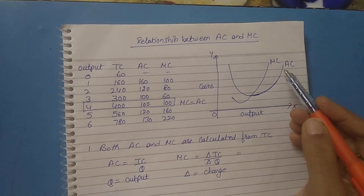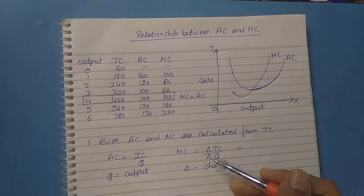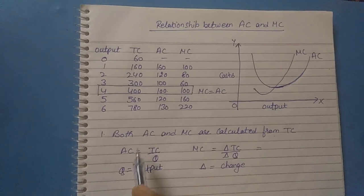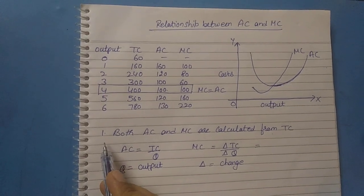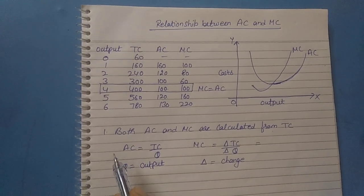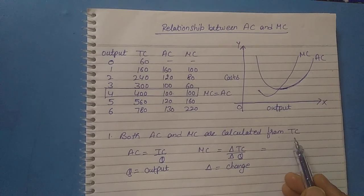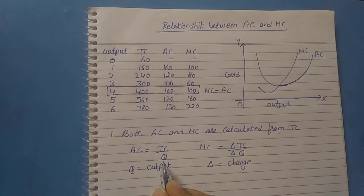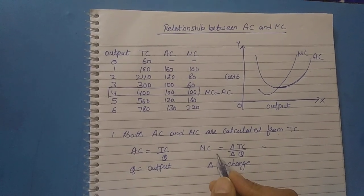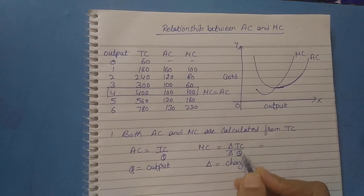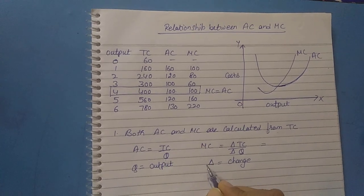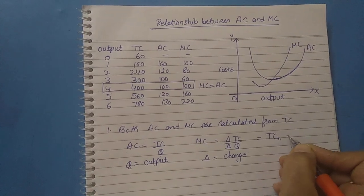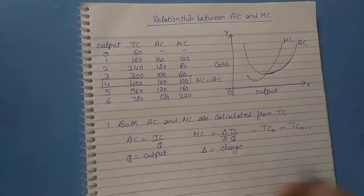Now we will derive this diagram into words — the explanation of how to write the relationship between AC and MC. The first point: both AC and MC are calculated from TC, i.e. total cost. The formula is: average cost equals total cost divided by Q, where Q means output. The formula for marginal cost is change in TC divided by change in Q. There is one more formula for marginal cost: TC(N) minus TC(N-1).